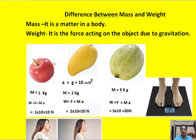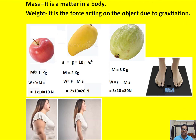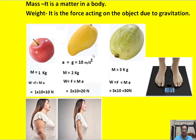Let us take examples. Here is an apple whose mass is 1 kg, a mango whose mass is 2 kg, and a cabbage whose mass is 3 kg. Let us assume there is an acceleration acting on these objects equal to 10 meters per second squared. We know Newton's second law: the force acting on an object of mass M is F equals MA.